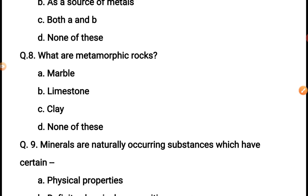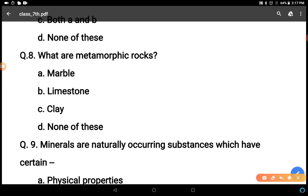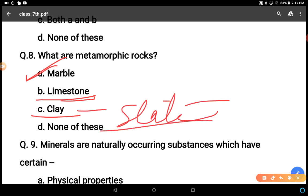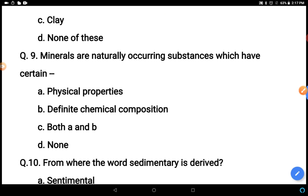What are the metamorphic rocks? Options: marble, limestone, clay, none of these. Among these options, clay is not metamorphic - it is the form of sedimentary. Limestone also sedimentary. So marble is the correct answer, because limestone changes into marble due to heat and pressure and clay changes into slate. Marble is an example of metamorphic rock.